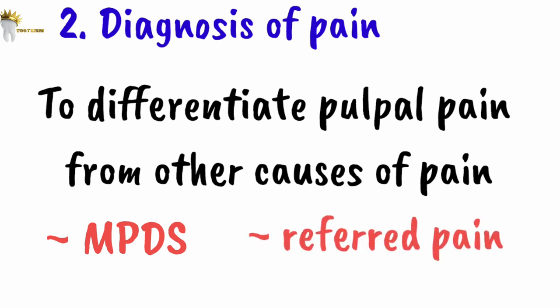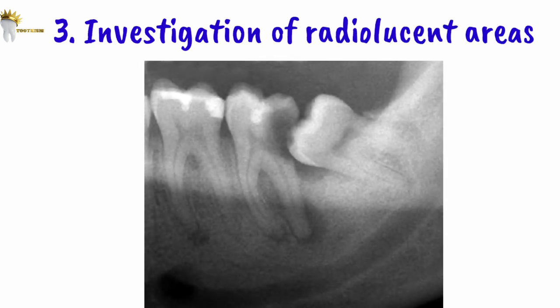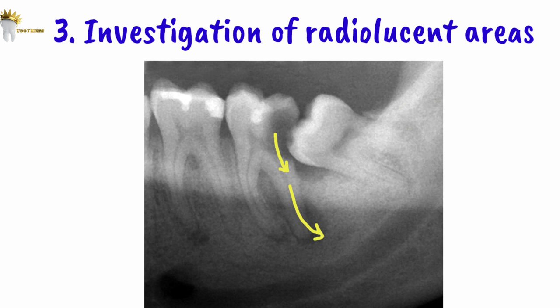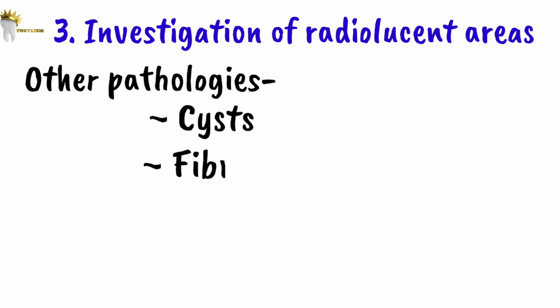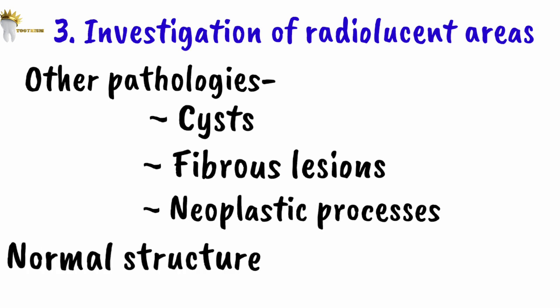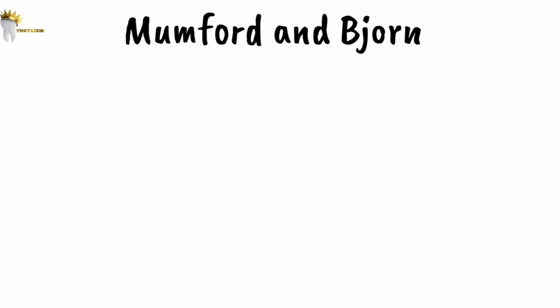Third is for the investigation of radiolucent areas. When we see radiolucency at the apex of a tooth, it could be the result of extension of pulpal pathology in the periradicular area, or it could be other pathological processes like cysts, fibrous lesions, or neoplastic processes — or even a normal structure like the mental foramen. Pulp tests help us identify the reason for the radiolucency.